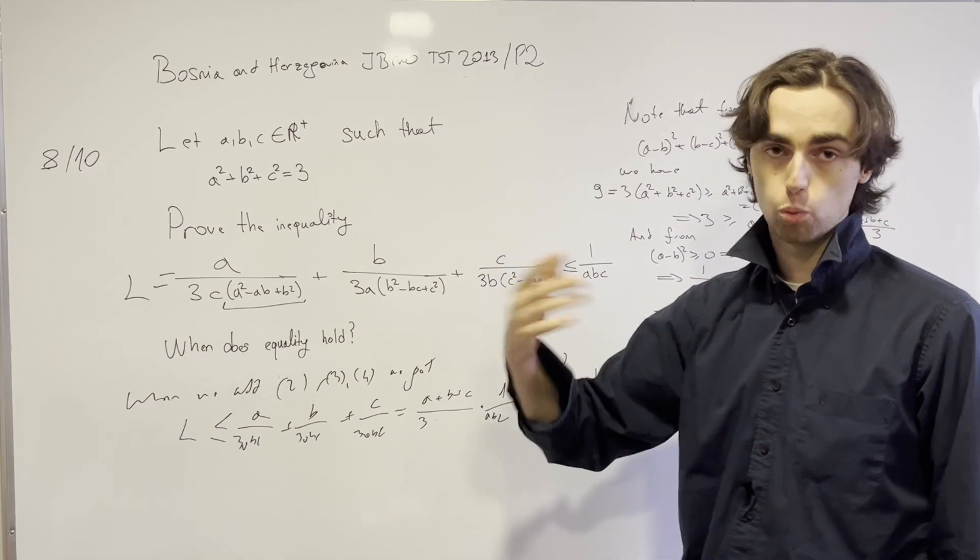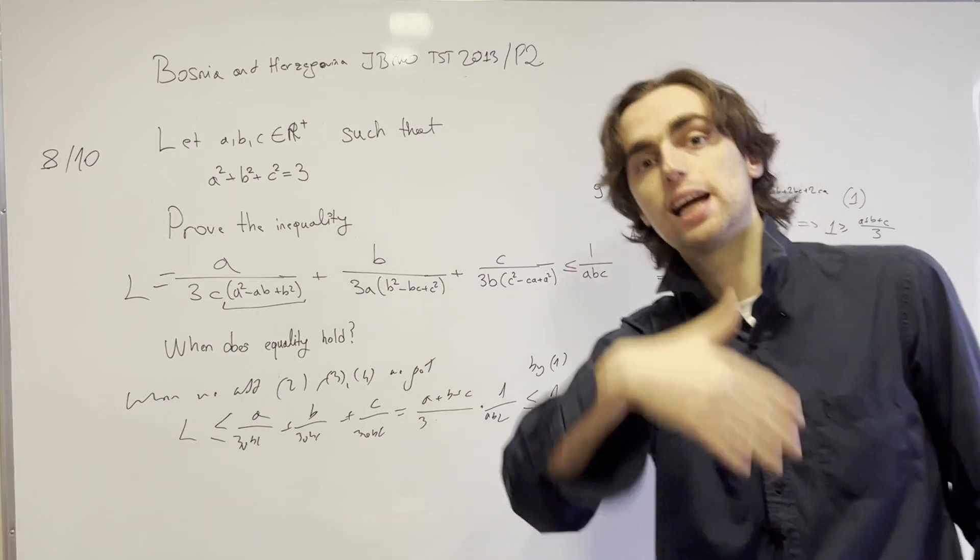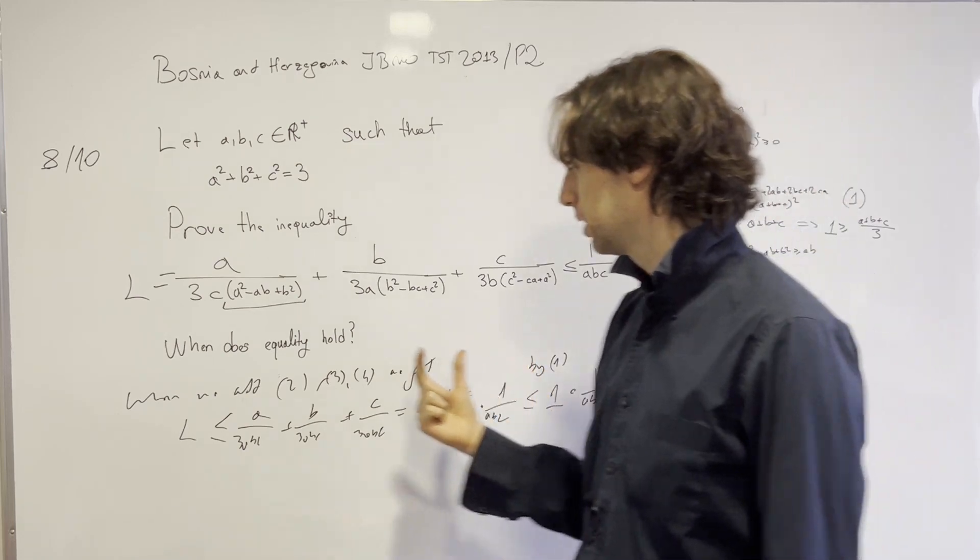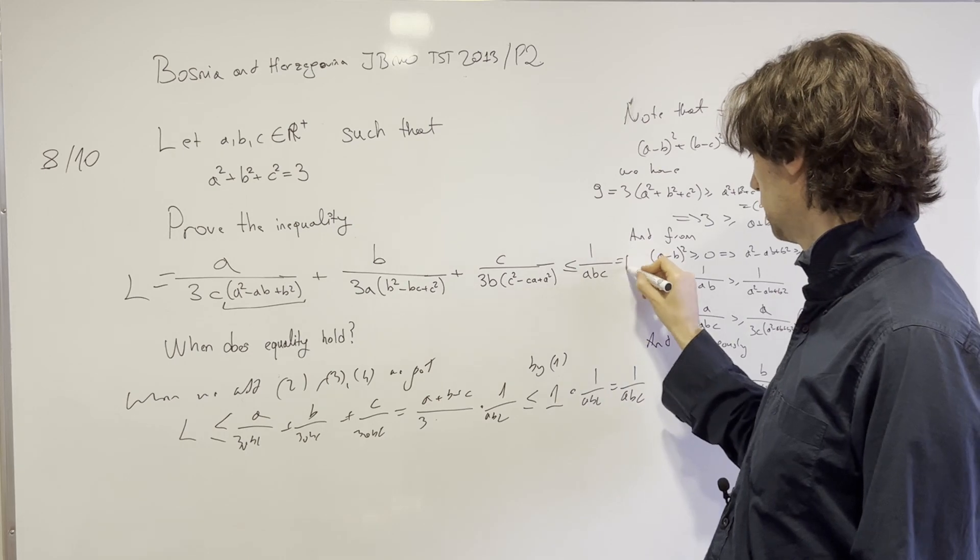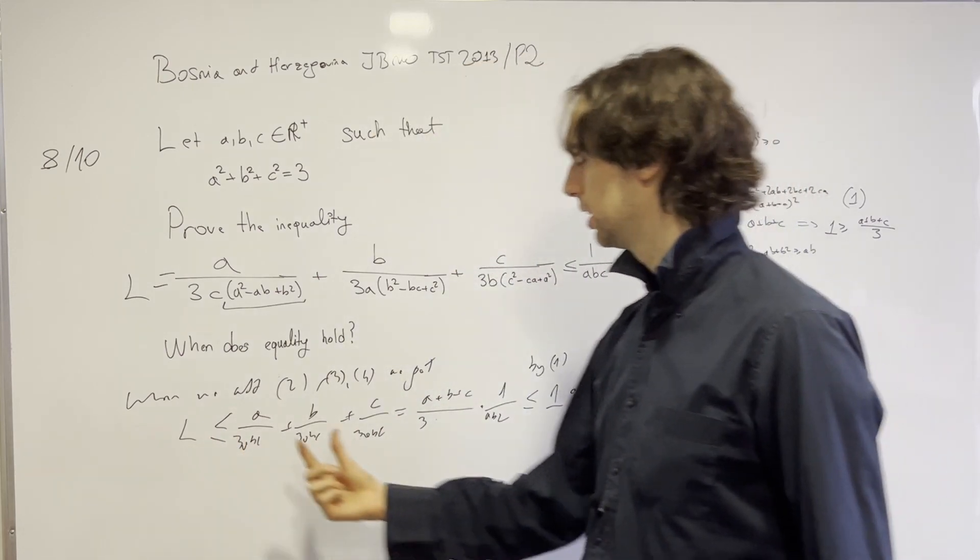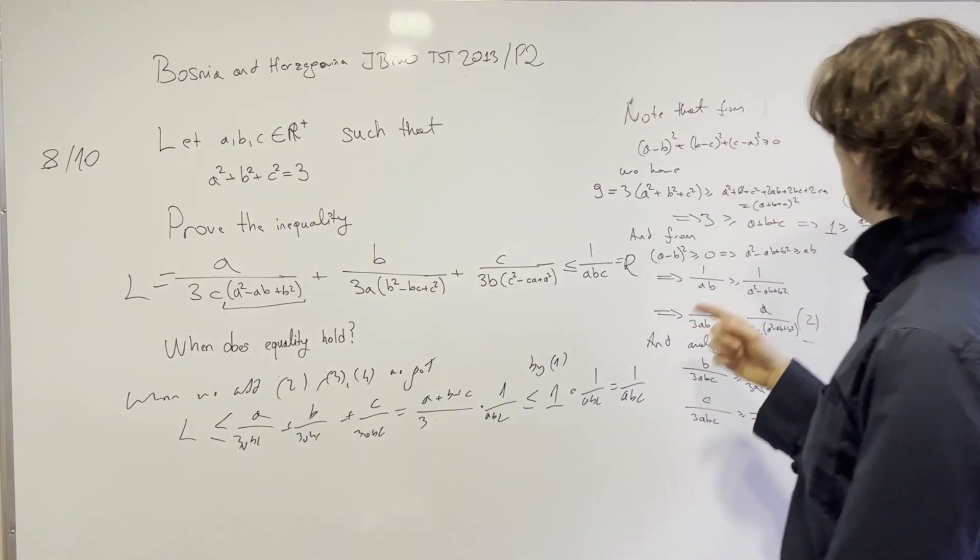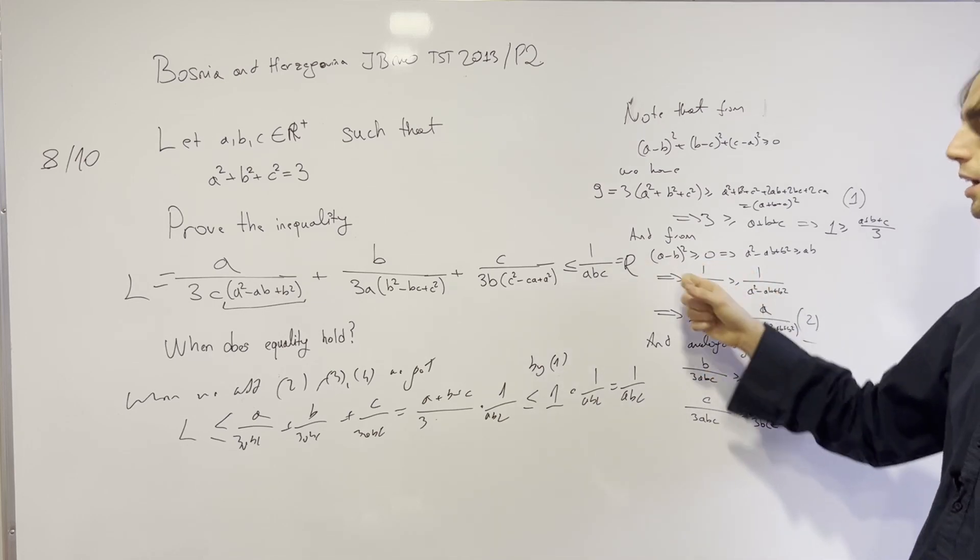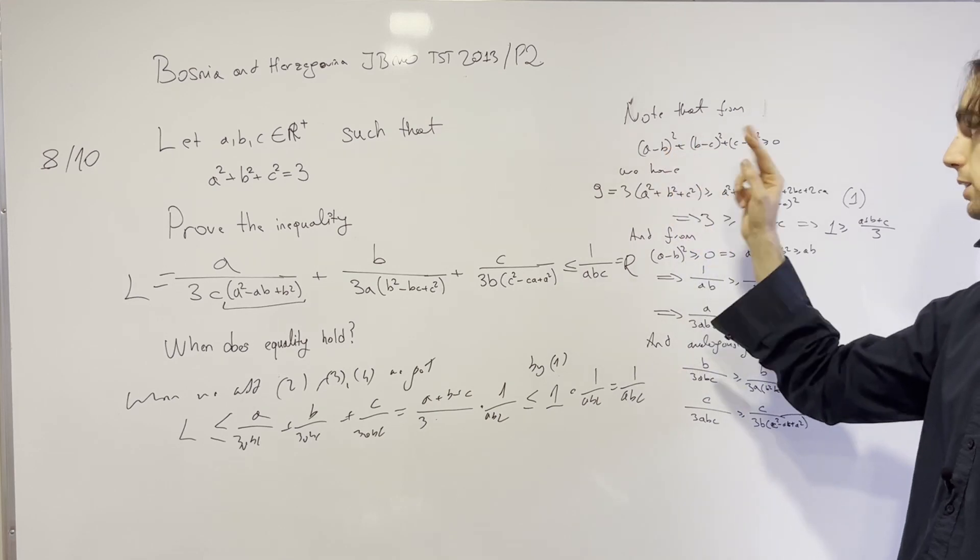So I think this inequality thing is just important to note that we can say, yes, equality holds for a=1, a=b=c=1. But we need to say, why is that the only case when equality holds true? And what we would say here, to have the equality for L to be equal to—call this R—for L to be equal to R, we must have equality here and here. Here we have equality if we have equality in 2, 3, 4. And for every single one of 2, 3, 4, we have equality if and only if a equals b, b equals c. And in 1 we have equality if and only if a=b=c.